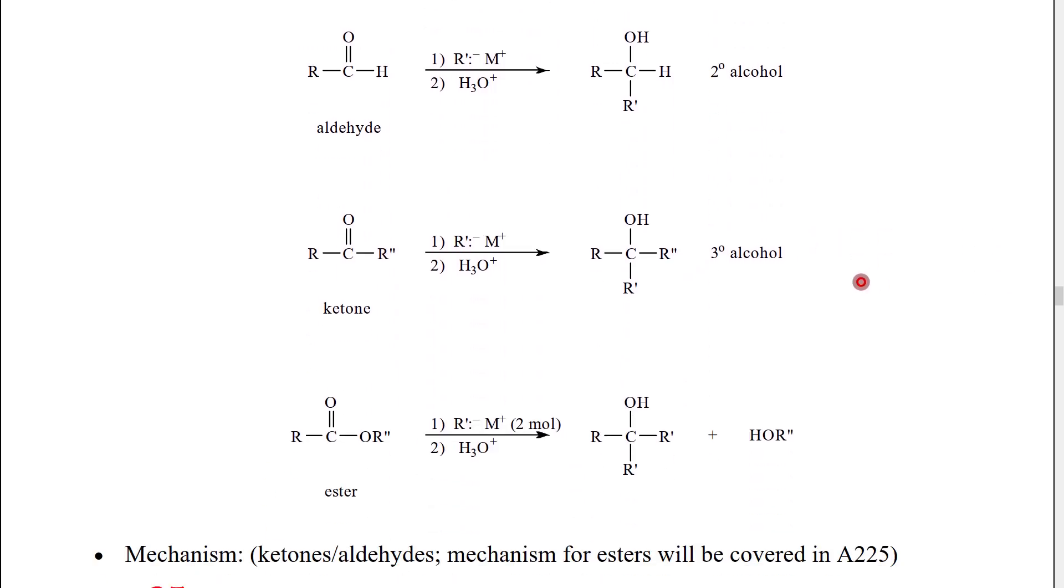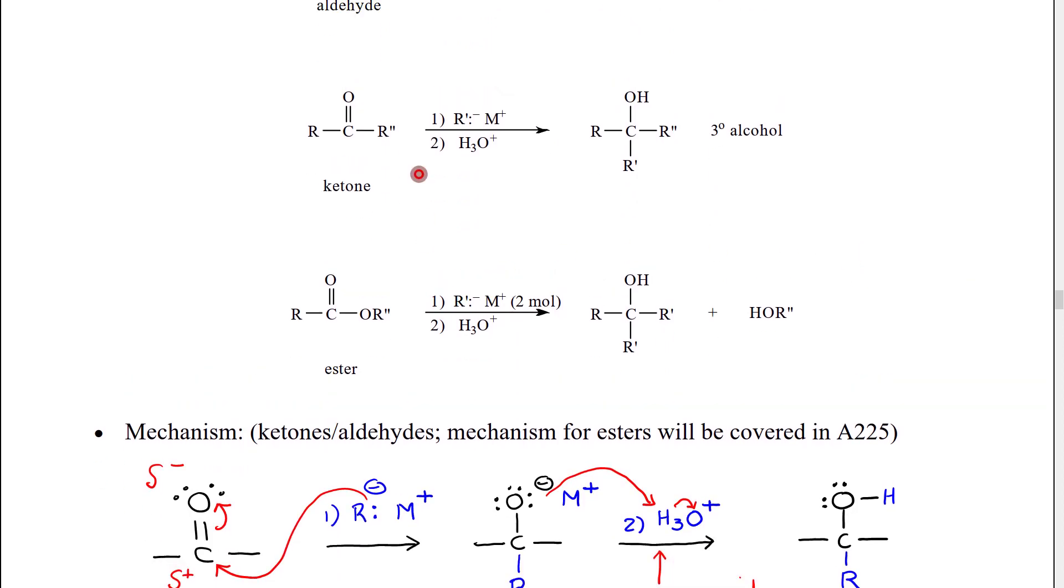If we use a ketone, what we would have to begin with is two carbon groups that could be completely different from each other. So for example, this could be a methyl that could be a phenyl group. The Grignard carbon group could be different from those two. So we have three different possible carbon groups we could have attached to our central carbon at the end. Two carbon groups at the beginning. We add our third one on. We make our single bond with the hydrogen. That's going to be a tertiary alcohol. So we can make a primary, secondary, or tertiary alcohol.